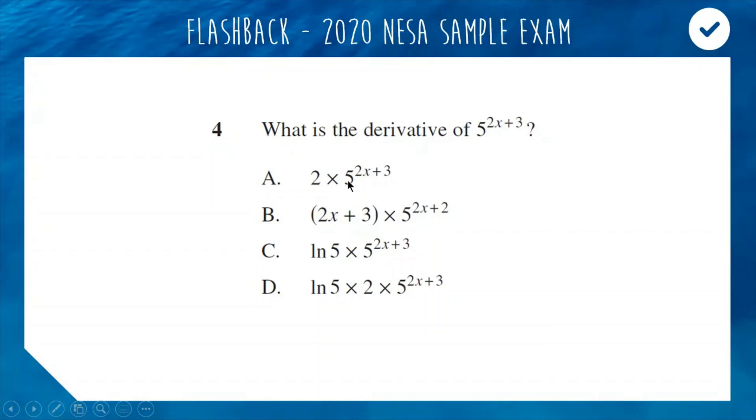We looked at in class the reason behind this, but the shortcut is when you're differentiating with a different base, first of all you do what you would do normally and then you just multiply by ln of the base. So we just need to do this answer, multiply by ln 5, which is why D is the correct answer. Well done if you spotted it.